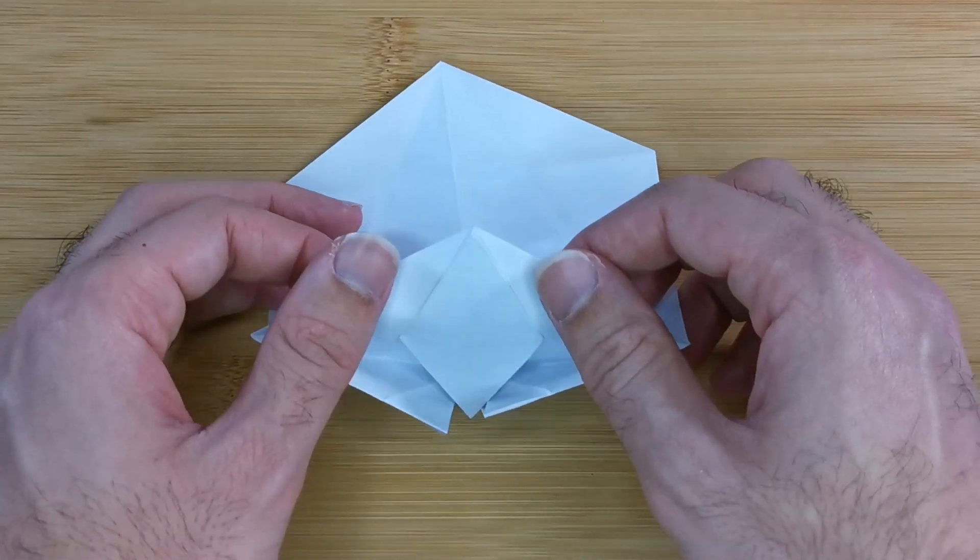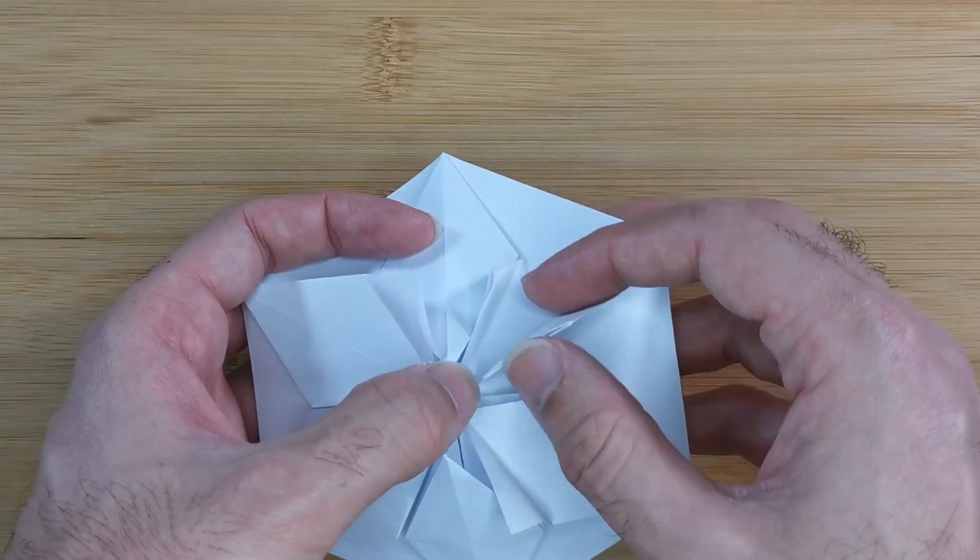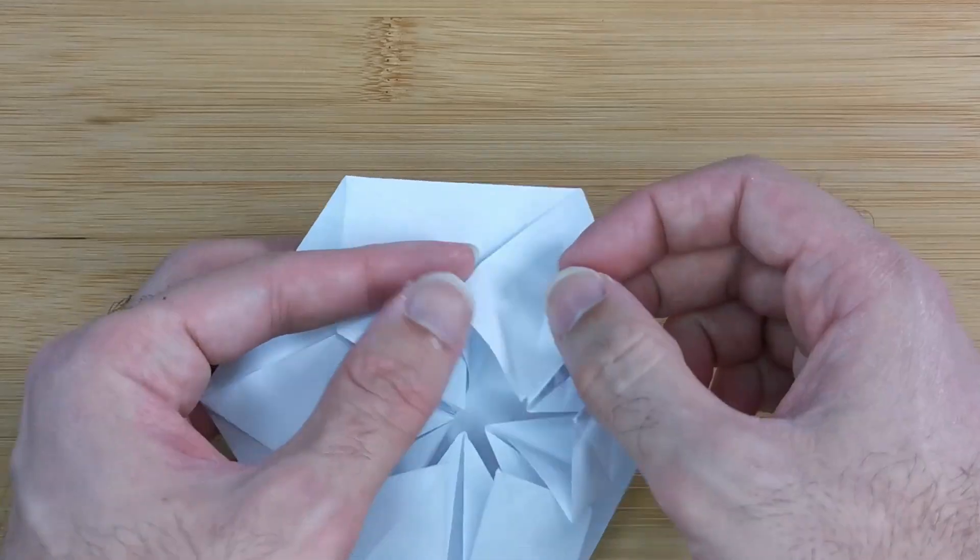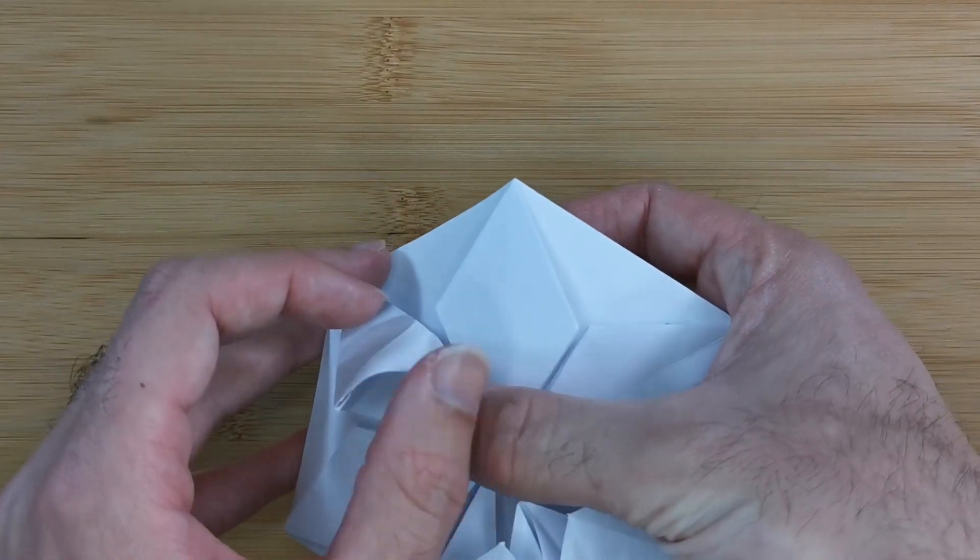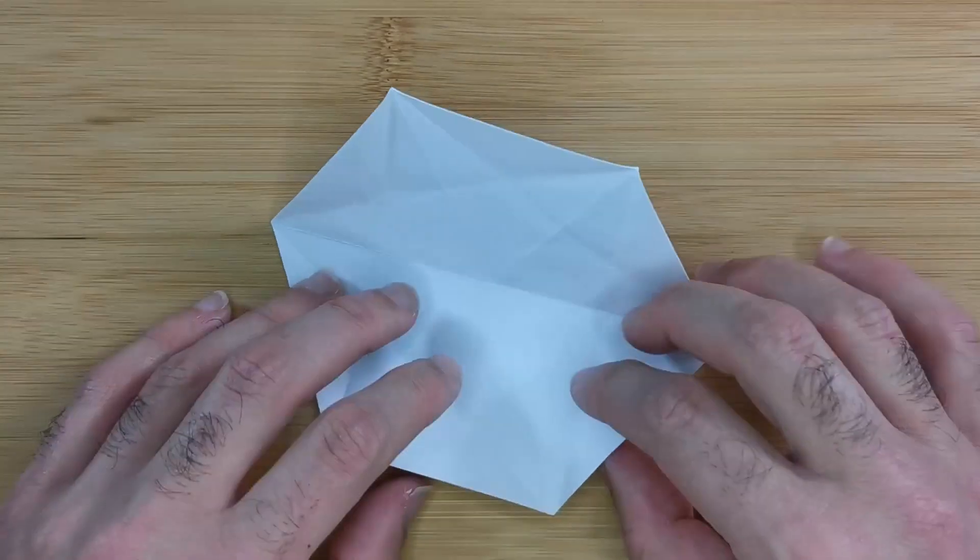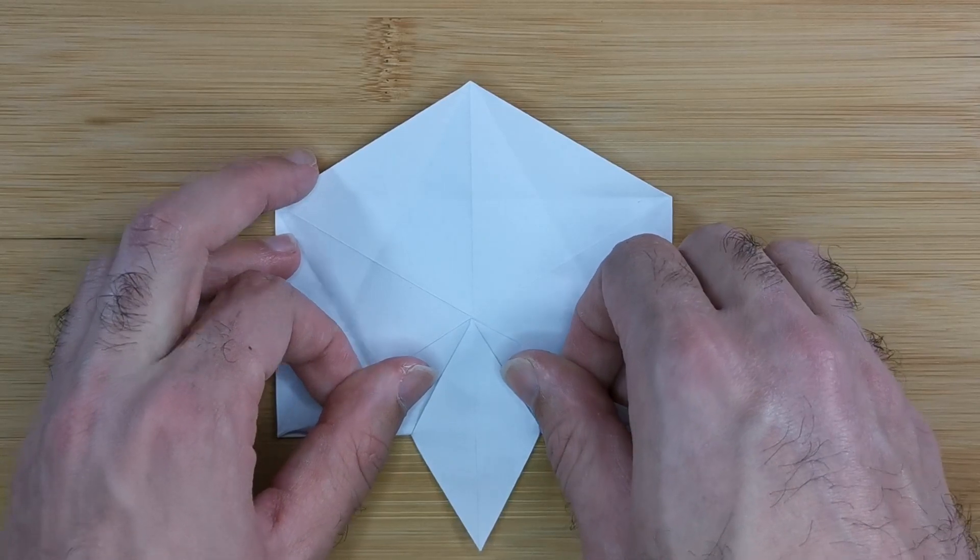Here you can see my diamond doesn't want to stick out and this is because these inside reverse folds have come undone. So let's just fold those back in. And now when we try to fold the corner to the center the diamond pops out.